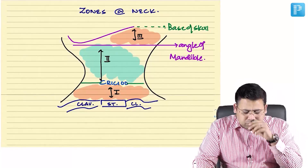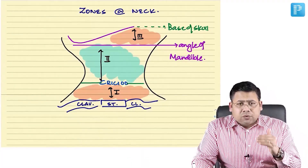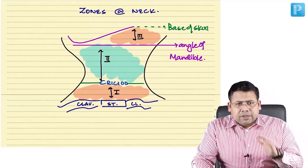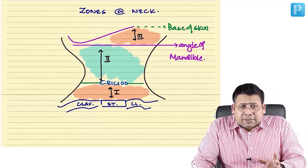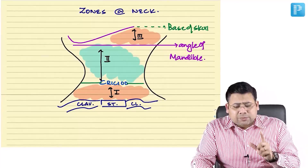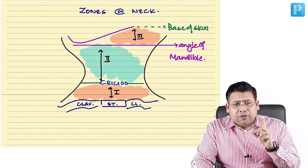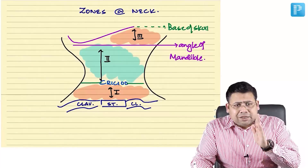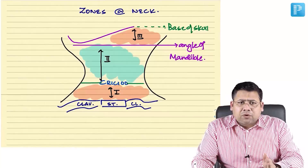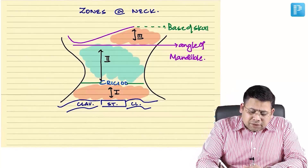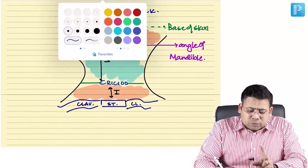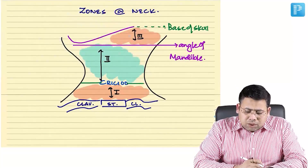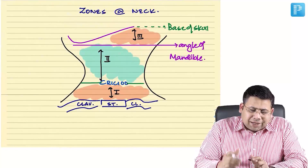One classical similarity between Zone 1 and Zone 3 is that some part of both zones is hidden behind a bony cage. Hence surgical explorations in these zones are very cumbersome — you need a sternotomy for Zone 1 and a mandibleotomy for Zone 3. This must be kept in mind when planning intervention.